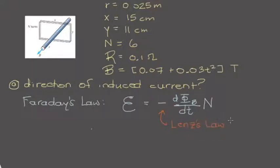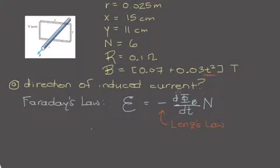What Lenz's Law says in words is that the induced EMF — the voltage induced in the rectangular loop of wire — is always in a direction that opposes the original change in flux that caused it. We have a change in magnetic flux because the magnetic field within the solenoid is itself changing with time, it is dependent on time. So because it's dependent on time, we have a change in flux d(phi_b)/dt, and the induced EMF in the rectangular loop must oppose that change in magnetic flux.